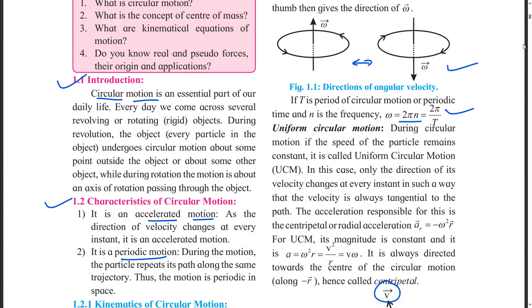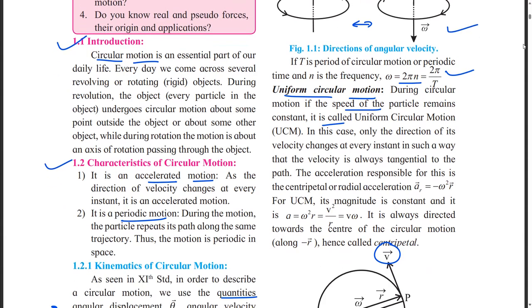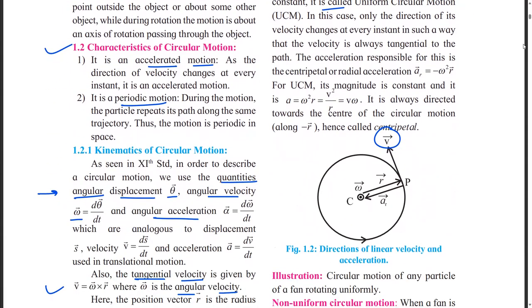And then what is uniform circular motion? Uniform circular motion is circular motion with a constant speed. So if uniform circular motion is there and its magnitude is constant, then we are getting the acceleration as omega square R. Are you getting? Yes, sir.